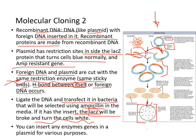The bacteria will be selected using ampicillin to kill off ones that didn't take any plasmid. If it has the insert, lacZ will be broken and cells will remain white. That process is shown here — this is how you select for plasmids that have the foreign DNA inserted, and you amplify it using the bacteria. You can insert any genes or enzymes using this method.